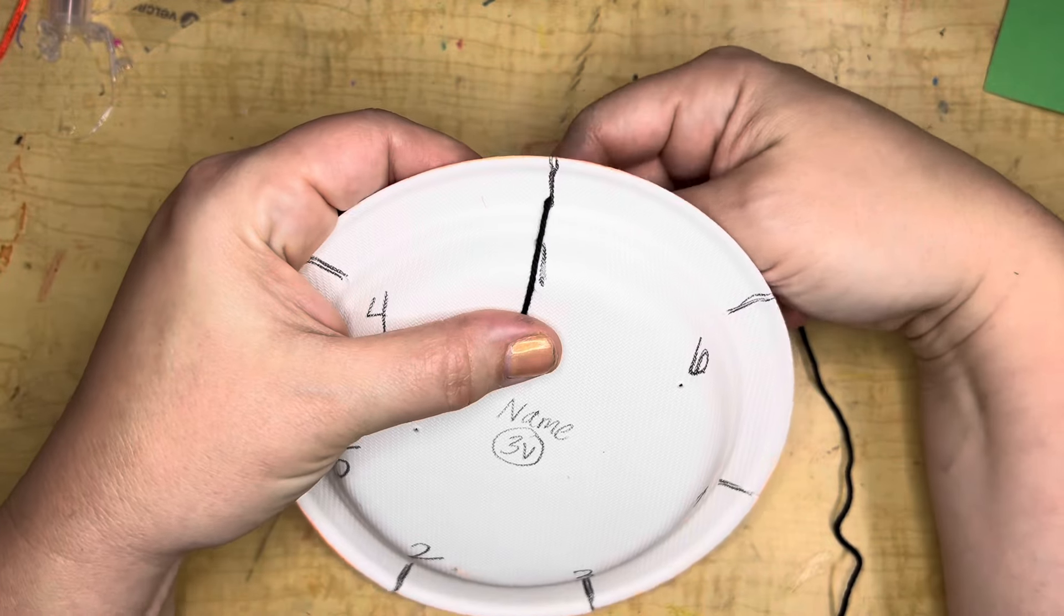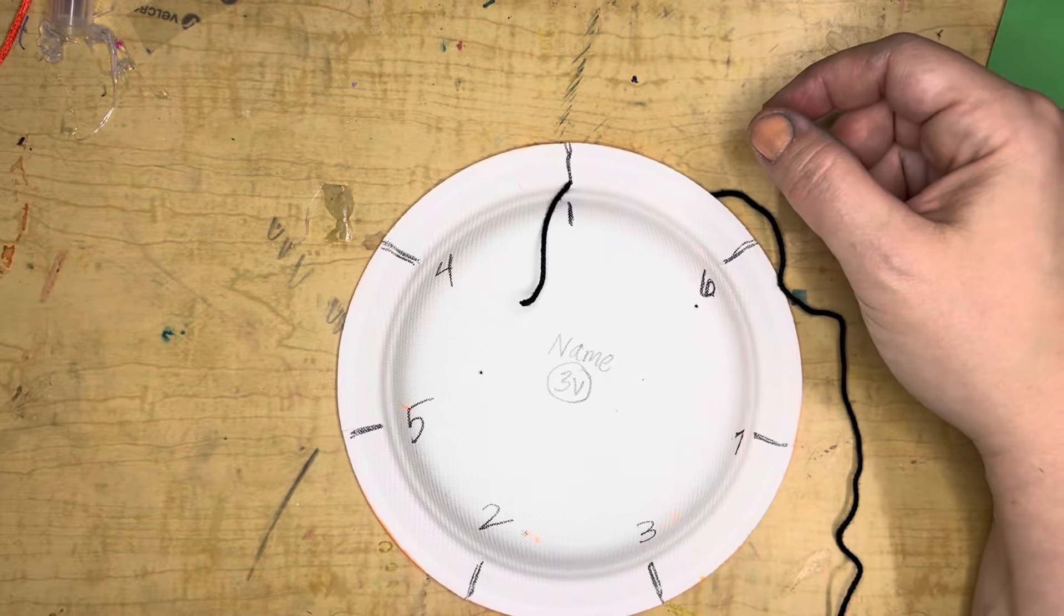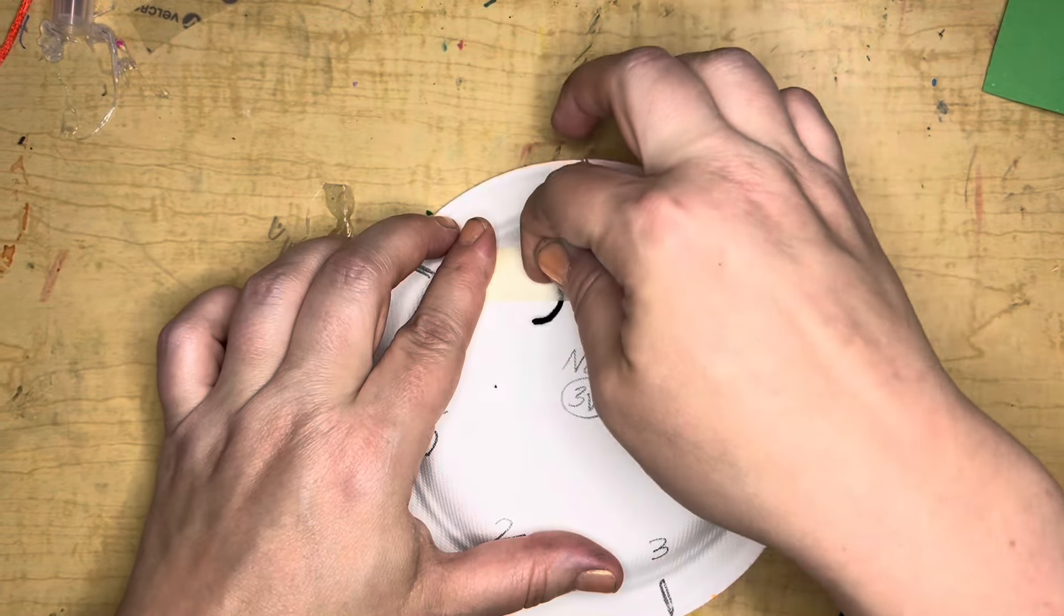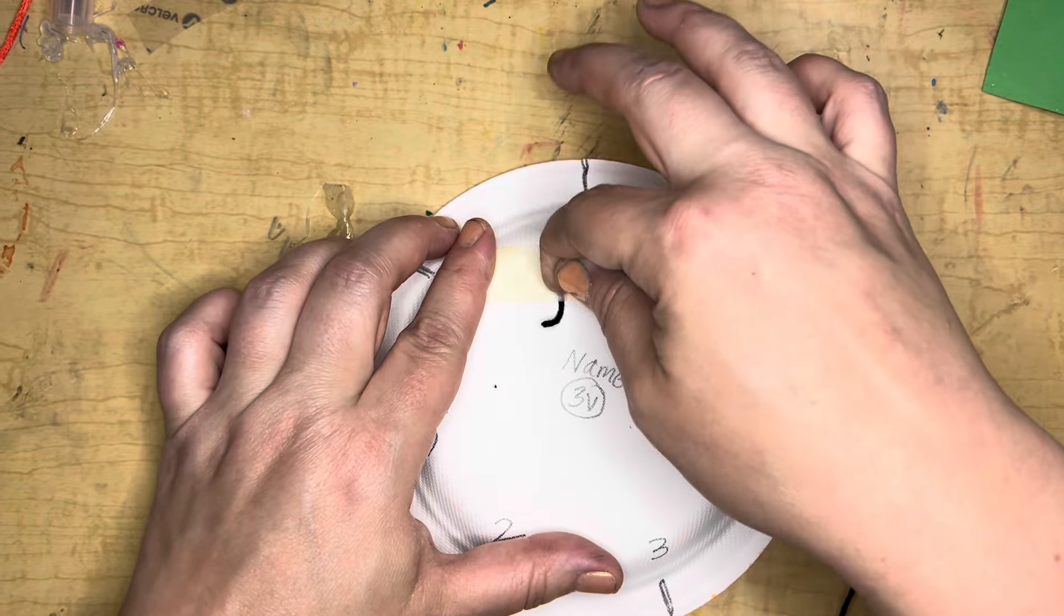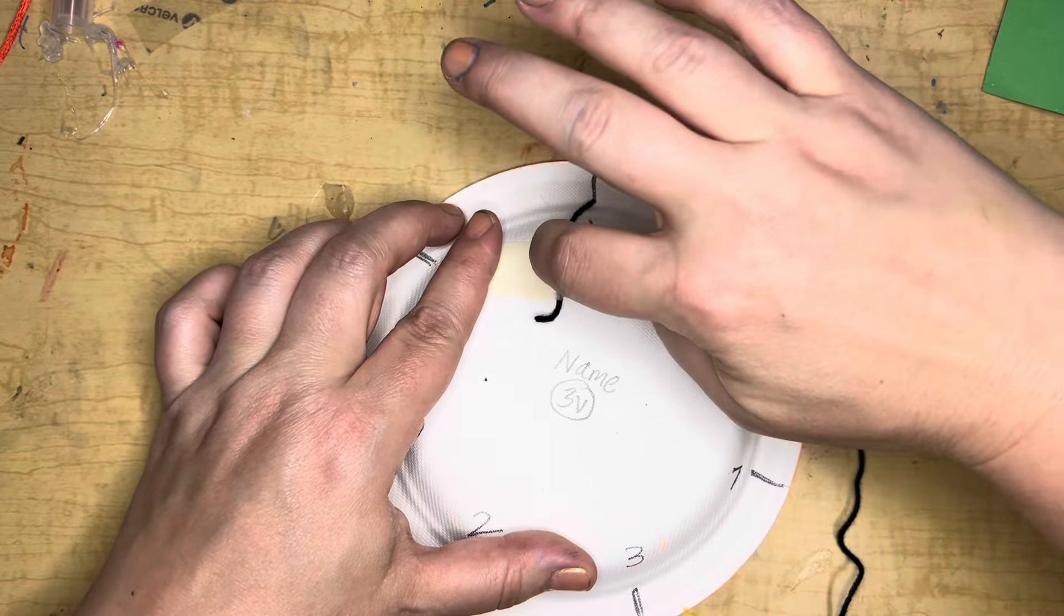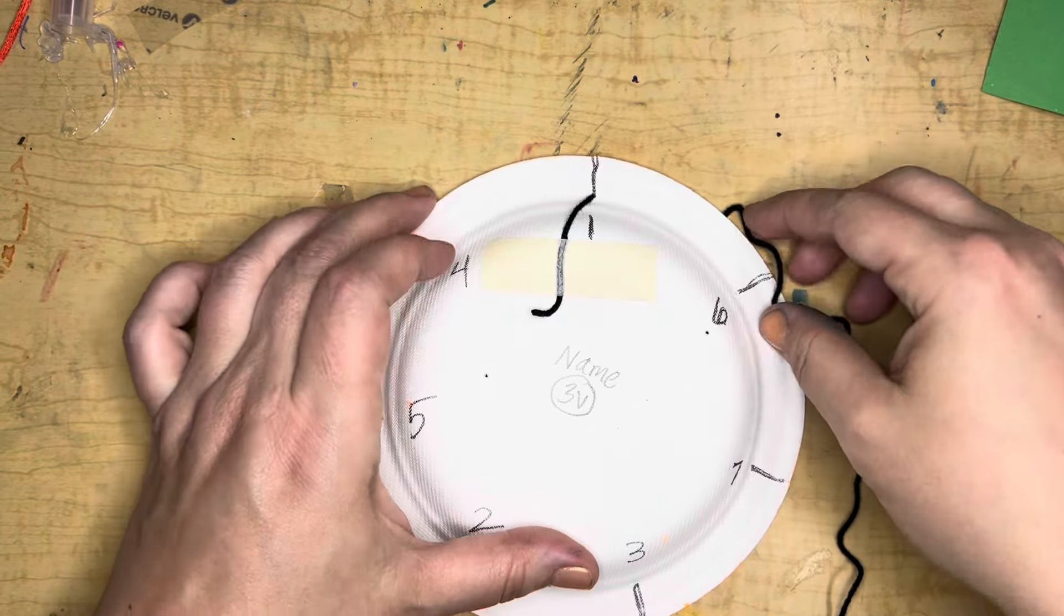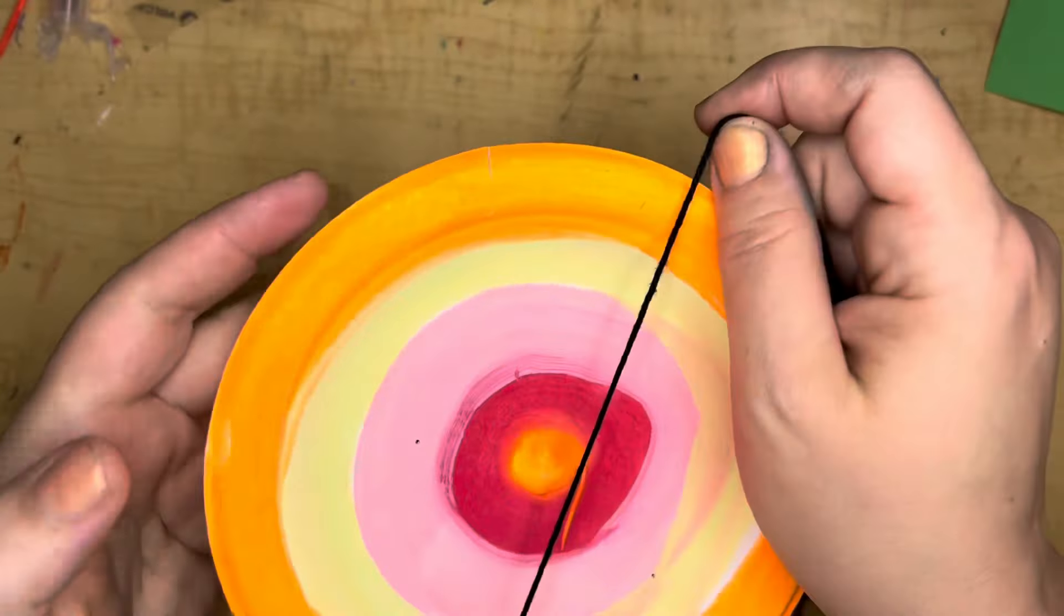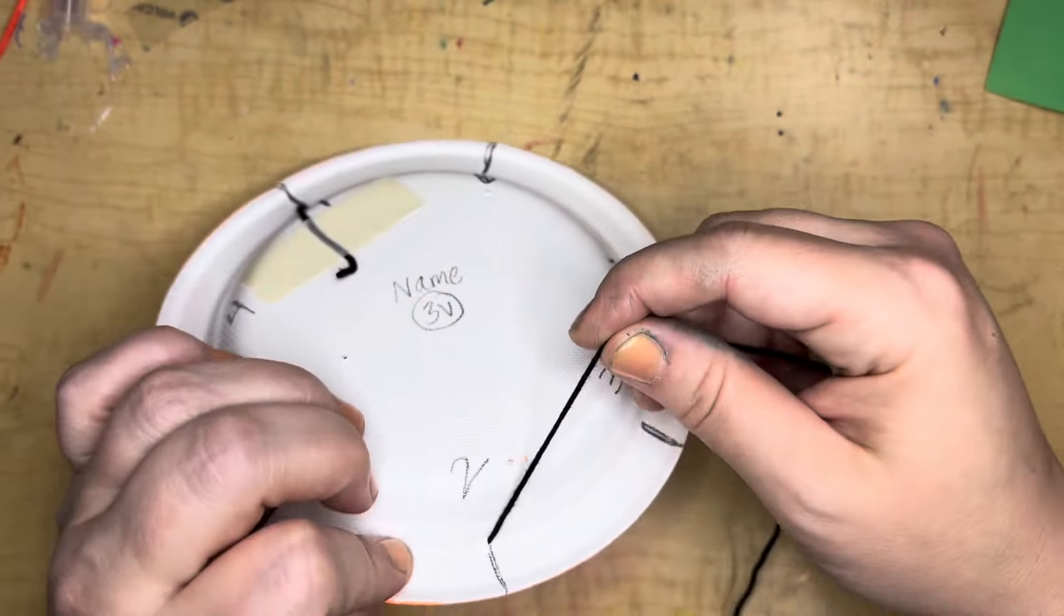You're going to get a piece of yarn and you're going to start at number one. You're going to tape it down. Our yarn is going to go up through the odd number doors and down through the even number doors. Here's what I mean: I'm going to bring my yarn across and go down through number two.